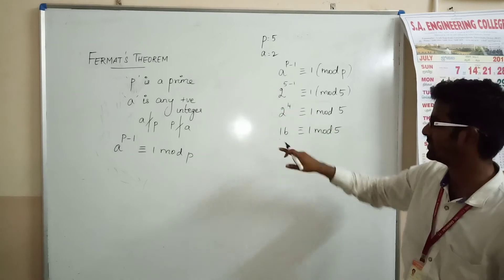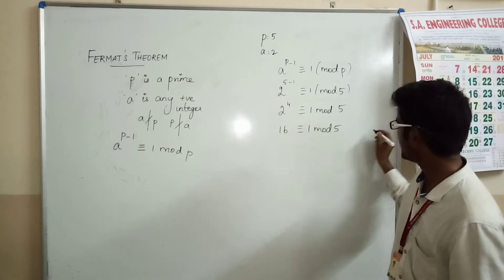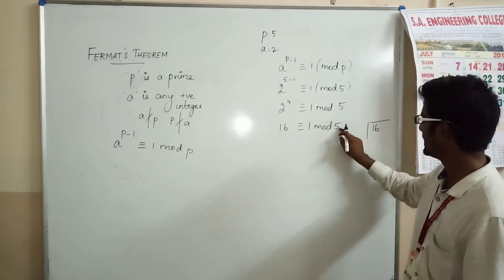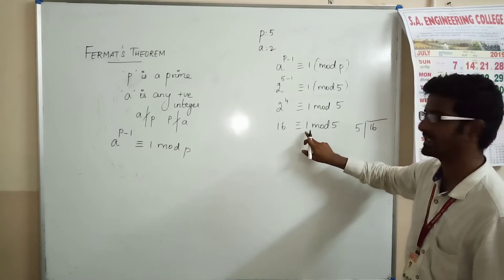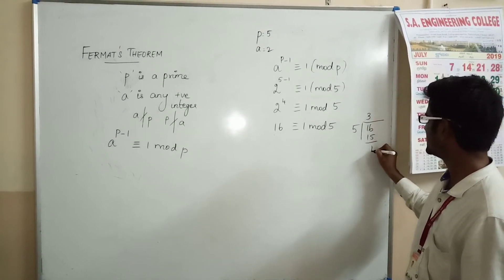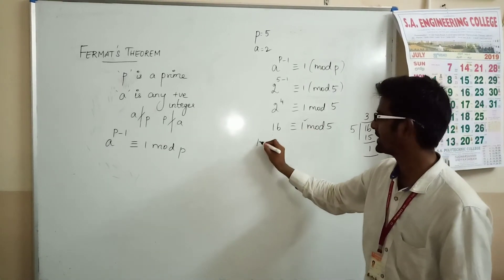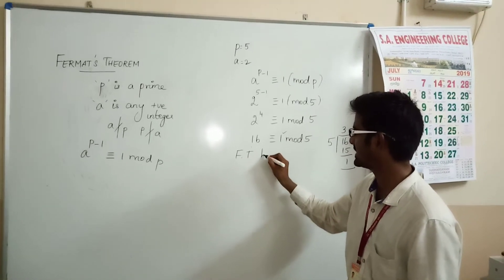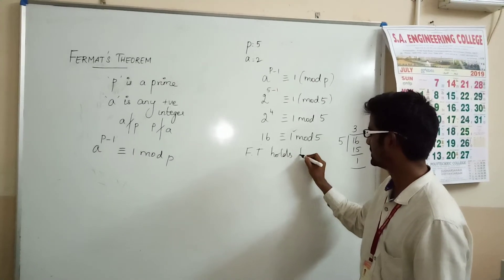We will check whether this is right, whether Fermat's theorem holds true or not. 16, when divided by 5, we should get 1 as the remainder. 16 = 3 times 5 plus 1, remainder 1. Yes, Fermat's theorem holds true.